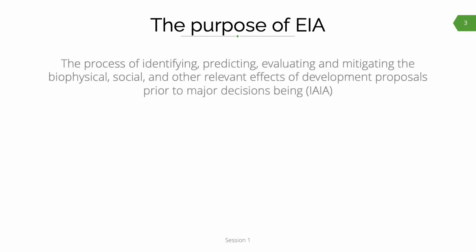Given that the training focuses on the role of the mitigation hierarchy in EIA, it is worth revisiting the purpose of EIA. There are many different formal definitions of EIA which embrace its purpose. One of the most often cited is IAIA's definition — that is the International Association for Impact Assessment — which describes EIA as the process of identifying, predicting, evaluating, and mitigating biophysical and social effects of development prior to major decisions.